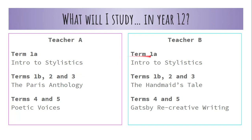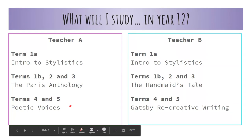In Term 1A — called 1A because it's not the whole of term 1, though it is the majority — both teachers will teach you the same thing: an introductory unit on stylistics. Then we branch off and do different texts. One teacher will do the Paris Anthology with you, the other teacher will do The Handmaid's Tale, and then we finish the year on poetry and the Great Gatsby recreative writing.